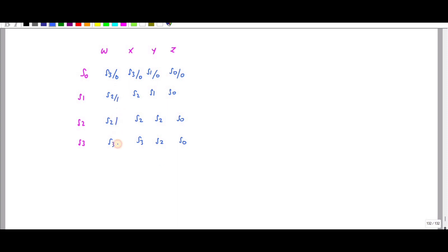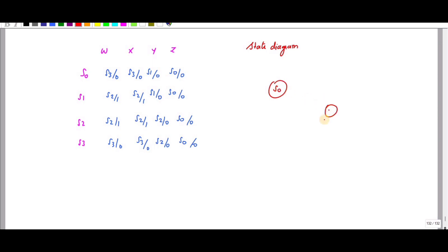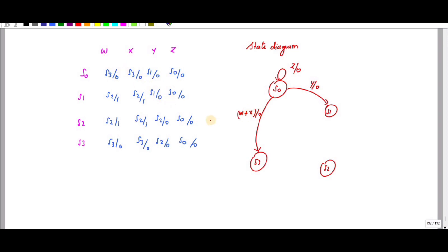The output is 1 only for four values: S1, S3, S3, S1, S3, S3, S1, S3, S2. It goes to S3 when W and X values are zero.